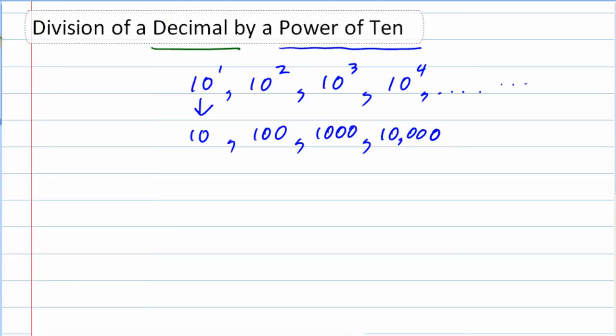So we have the decimal being divided by, let's give an example here. What if we had 356.8, and that was being divided by one of these guys, one of these powers of 10, like maybe 100.